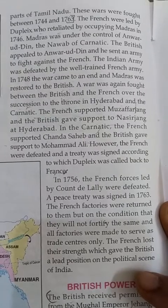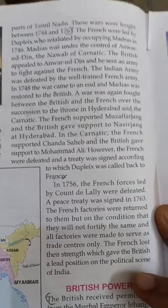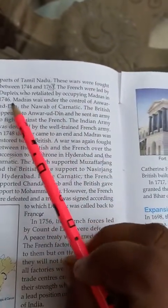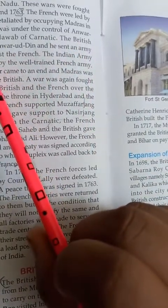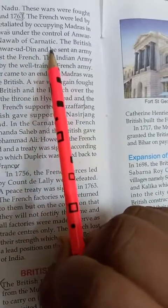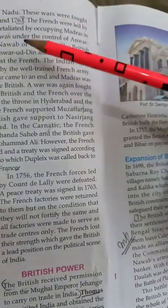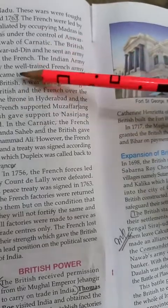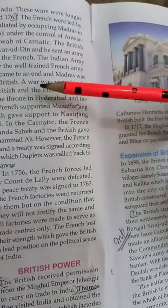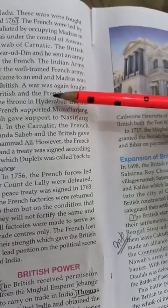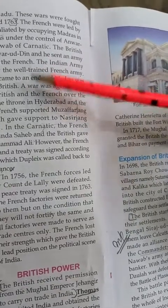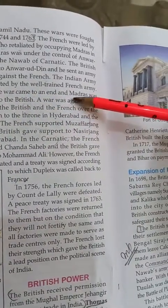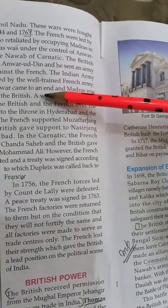The French were led by Dupleix, who succeeded in occupying Madras in 1746. Madras was under the control of Anwaruddin, the Nawab of Karnatak. The British appealed to Anwaruddin and he sent an army to fight against the French. However, the Indian army was defeated by the well-trained French army. In 1748 the war came to an end and Madras was restored to the British.